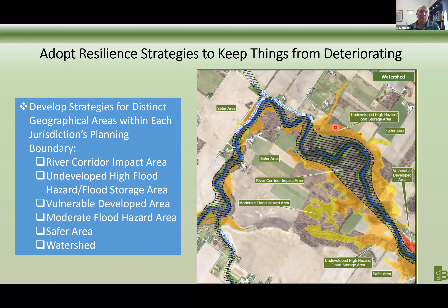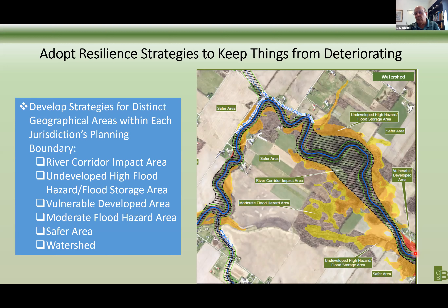The second zone is undeveloped high hazard flood storage areas — the remaining areas in the 1% chance floodplain that are currently open and acting as storage areas. These areas represent the remaining storage in the system, and their significance cannot be understated. First, they provide habitat improvement. These are the muck areas and wetlands associated with this river, and they provide very valuable service to everything downstream of them. The storage in this zone is keeping the rest of these areas from being in the floodplain.